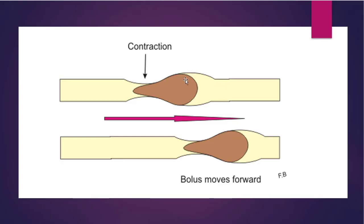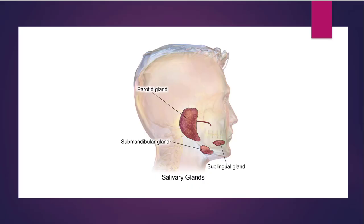Now I want to show you peristalsis — peristaltic movement — how food is transported in the esophagus and small intestine. By the contraction of muscles in the small intestine and esophagus, food moves forward in a wave-like movement. That wave-like movement of food in the small intestine and esophagus is called peristalsis.